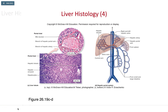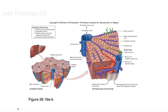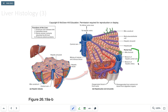On a histology slide, we first look at the portal triad, which includes the bile ductule, the hepatic artery bringing oxygen-rich blood, and the hepatic portal vein. These empty into a sinusoid — a canal that leads into the central vein — and the central vein then leads into the inferior vena cava.